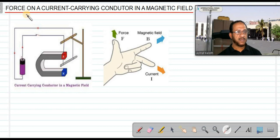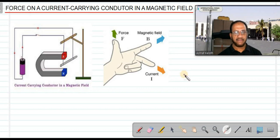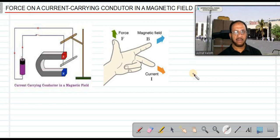Today's topic is the force on a current carrying conductor in a magnetic field. In the previous classes we discussed the formation of different types of magnetic fields when a current is passed through a conductor — first for a straight conductor along with Oersted's experiment, then the pattern of field lines in a single loop of wire, then a solenoid, and how to convert a solenoid into an electromagnet.